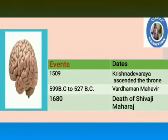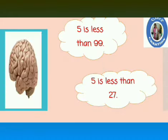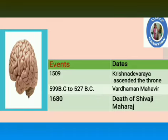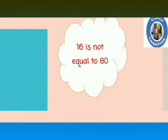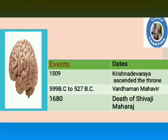Now look at this table carefully again. 5 is less than 99, and 5 is less than 27 — you get the answer: 599 BC to 527 BC, Vardaman Mahavir. Again the same table: 16 is not equal to 80 — and you get 1680, Death of Shivaji Maharaj. Those who are good at maths will find this method very easy to remember dates in history, which you normally tend to forget.